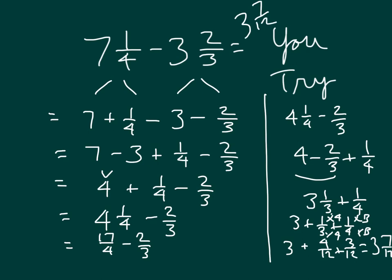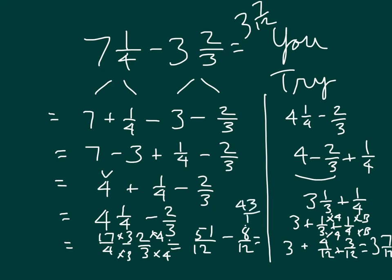So 7 and 1 fourth minus 3 and 2 thirds equals 3 and 7 twelfths. Going back to Method 2 with 17 fourths minus 2 thirds: we need like units, so multiply by 3 and multiply by 4. 17 times 3 is 51, so we have 51 twelfths minus 8 twelfths, which equals 43 twelfths. 43 divided by 12 goes 3 whole times with a remainder of 7, giving us 3 and 7 twelfths — the same answer as before.